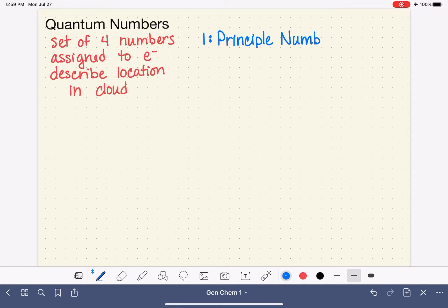The principal quantum number is abbreviated with a lowercase n. And the principal quantum number is used to describe the energy level of the electron.